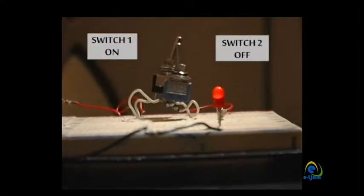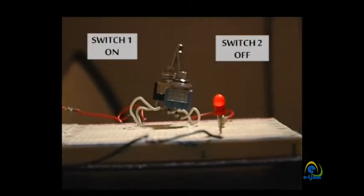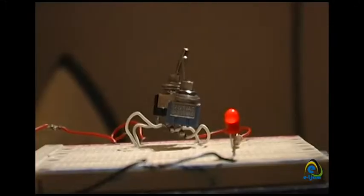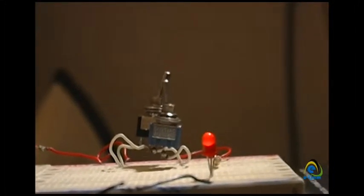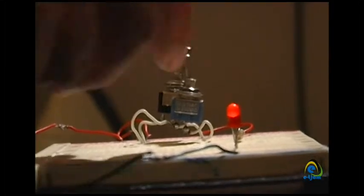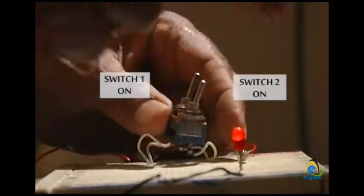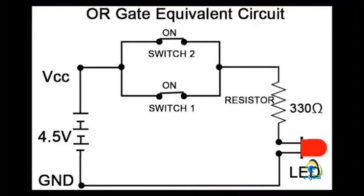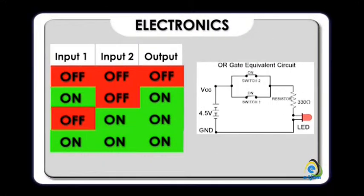It will be on. Insert the values in the third row of the table. Step four: turn on switch one and turn on switch two and see if the LED or bulb is on — it will be on. Insert the values in the fourth row of the table.